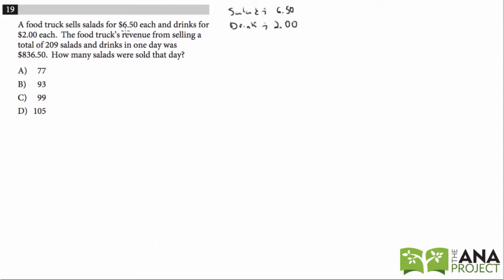The food truck's revenue from selling a total of 209 salads and drinks in one day was $836.50. So we're given a quantity 209. I'm going to go ahead and define some variables. So let's say S is the number of salads and D is the number of drinks.